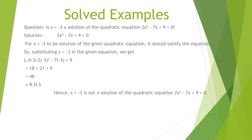Here is a solved example for quadratic equations. The equation is 2x² minus 7x + 9 = 0. We need to check whether x = minus 3 is a solution. For x = minus 3 to be a solution, this value must satisfy the given equation. Substituting x = minus 3: LHS = 2×(minus 3)² minus 7×(minus 3) + 9 = 18 + 21 + 9 = 48, which is not equal to RHS = 0. So x = minus 3 is not the solution of this quadratic equation.